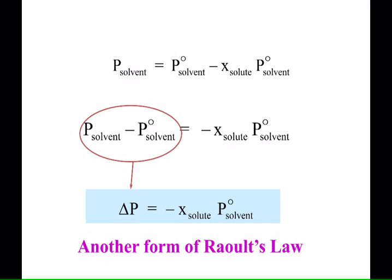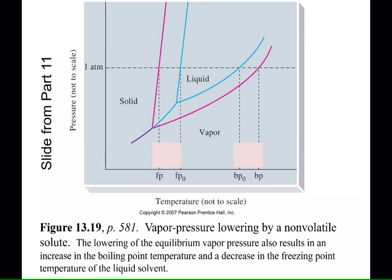The blue box equations are the ones you're going to see on your test, so this form of Raoult's Law will most likely be there. You'll get a separate equation sheet for your Gen Chem 2 unit exams. So the equilibrium vapor pressure lowering is equal to negative mole fraction of the solute times the equilibrium vapor pressure of the pure solvent at that temperature. The blue represents the pure stuff, and the pink is the solvent to which a non-volatile solute has been added.